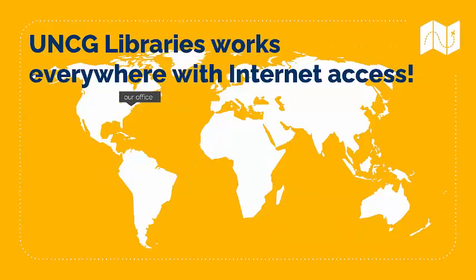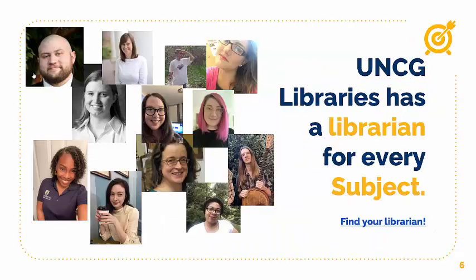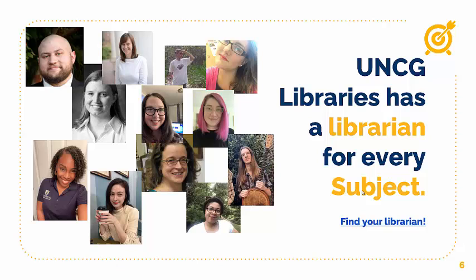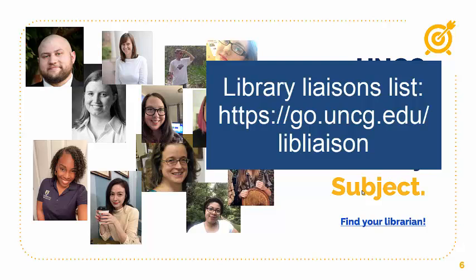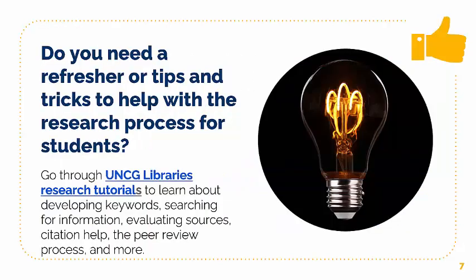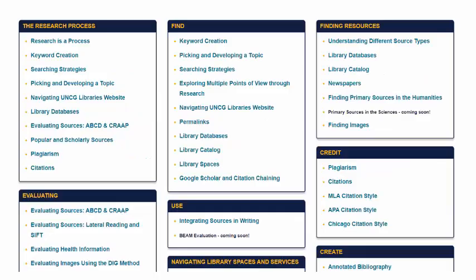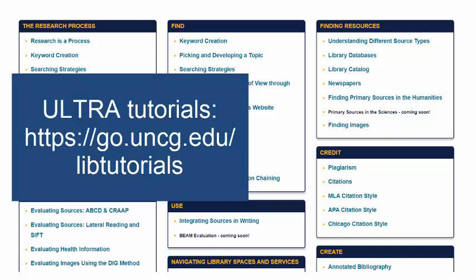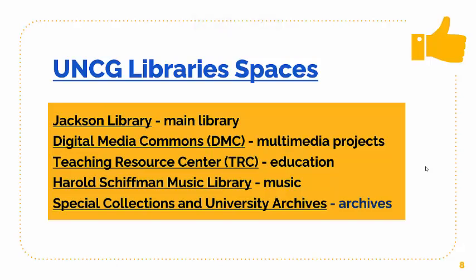We work anywhere with internet access including our services and resources. UNCG Libraries has a librarian for every subject and you can find them at go.uncg.edu/libliazon. We also have a suite of research tutorials you can use within your classes or for yourself to learn about the research process. They cover developing keywords, searching for information, evaluating sources, citation including citation management, peer review process, and more.